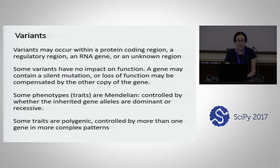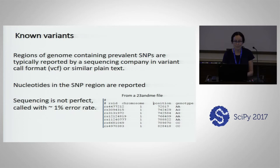Some phenotypes — which is another name for traits — are Mendelian. They're controlled by whether the inherited gene alleles are dominant or recessive. But some traits are polygenic, controlled by more than one gene in complex patterns. We are interested in both, as both occur.